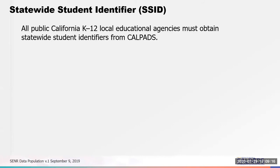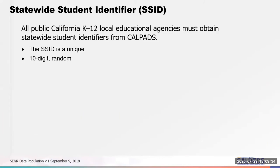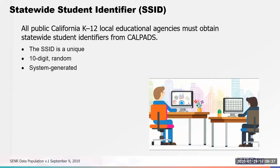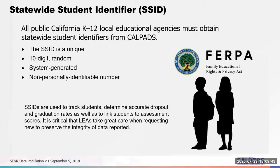Let's talk about the statewide student identifier, the SSID. All public California K-12 LEAs must obtain statewide student identifiers for students in CALPADS. The SSID is unique — a 10-digit random number that is system generated and non-personally identifiable. SSIDs are used to track students and determine accurate dropout and graduation rates, as well as to link students to assessment scores. It is critical that LEAs take great care when requesting new SSIDs to preserve the integrity of data reported to CALPADS.